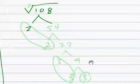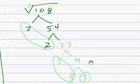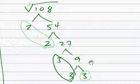Now we're going to factor. Let's move that over a little bit and factor it. 2 and 54, 2 and 27, 3 and 9, and 3 and 3.